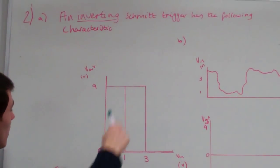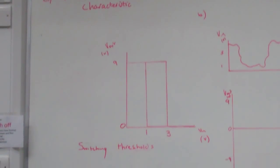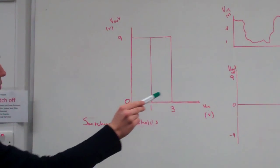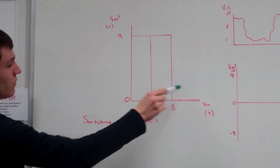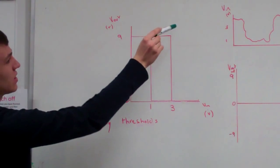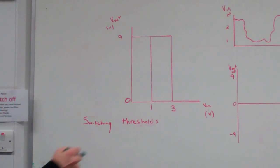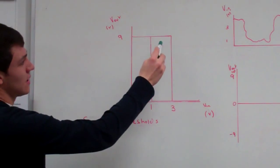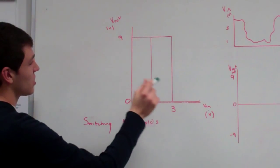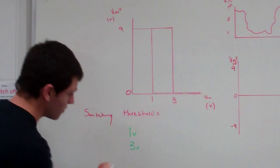It asks you to work out the switching thresholds of the characteristics of the Schmitt trigger. The switching thresholds are the values at which, when V-in hits certain values, it gives big changes in V-out. From the diagram it's pretty easy — all we need to do is find out the values where V-in is making the big changes. They're 1 and 3, so the switching thresholds are at 1 volt and 3 volts.